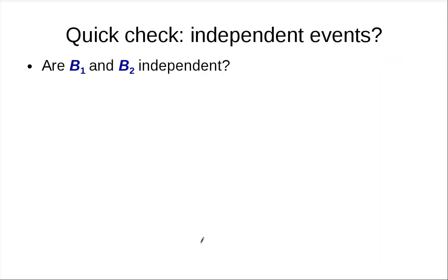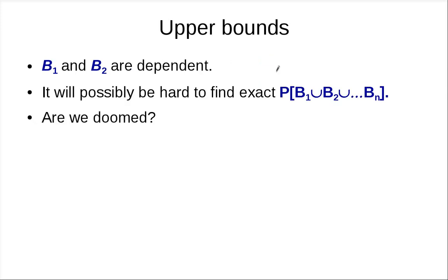Let's have a quick check: are B_1 and B_2 independent? If you actually calculate the probability, you can show that they are not independent. If one bin gets a lot of load, the probability that another bin also gets a lot of load is lower, because a lot of balls have already fallen into one bin. So they are dependent, and it would be hard to find the exact value because for n events you would need the inclusion-exclusion principle.